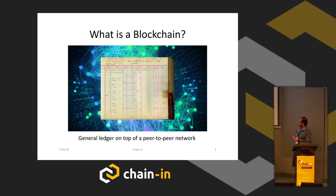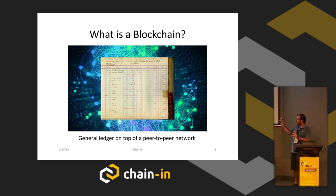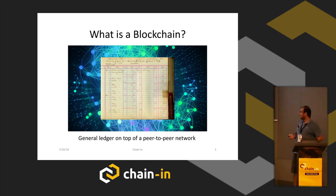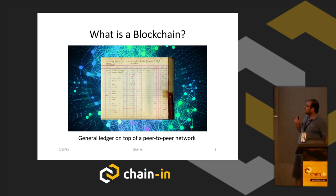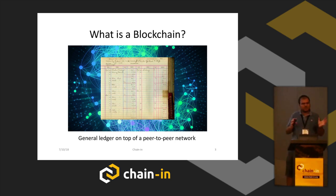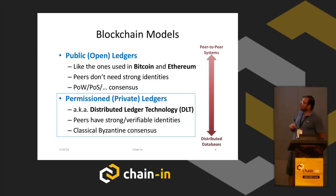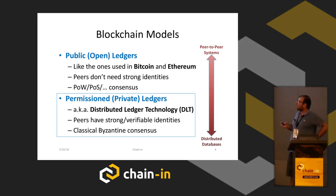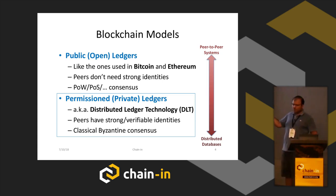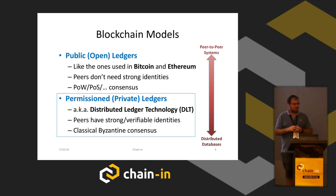For this talk I use a picture that is quite common in blockchain. What I'm considering here as a blockchain is just a general ledger on top of a peer-to-peer network. Based on that, we have two main models technologically. One is the public open ledgers, like Bitcoin, Ethereum, and many others, based on proof of work. The main characteristic is that everyone can participate — you don't need strong identities.